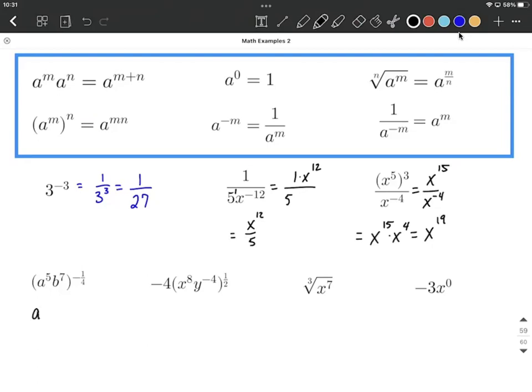So that's going to get us to a to the 5 times negative 1/4th times b raised to the 7 times negative 1/4th. To simplify further, let's first multiply our exponents.